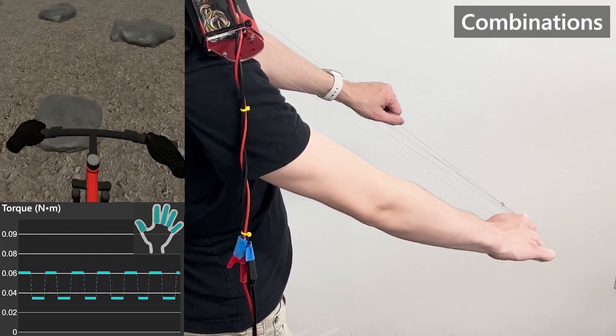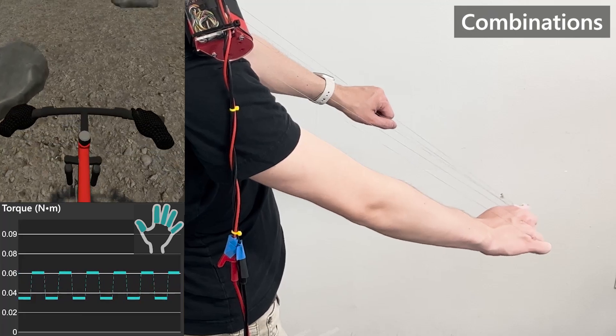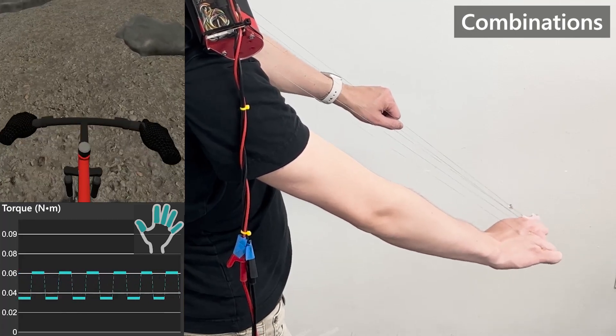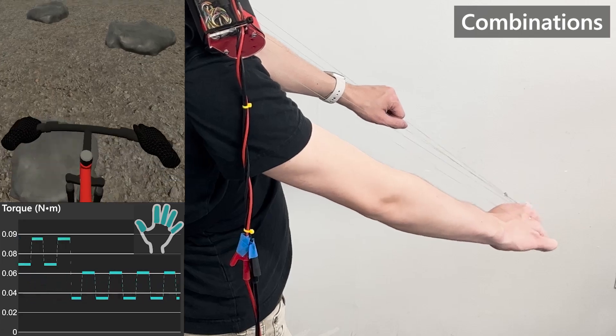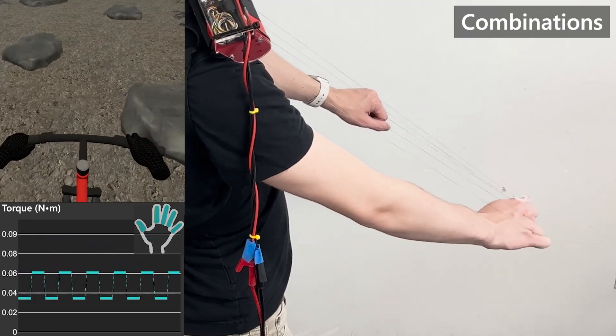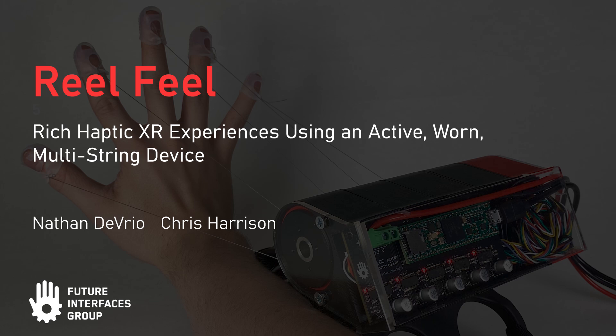All of these expressive dimensions can be mixed and matched to enable rich haptic VR experiences that prior work could only deliver in part. For instance, this mountain bike handlebar not only vibrates, but jerks the user's arms in response to terrain. For full technical and evaluation details, please see our paper.